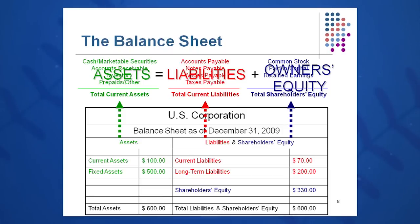On the right side, current liabilities are things you owe within one year, including accounts payable, notes payable, interest payable, taxes payable, and wages payable. What's left over after subtracting current liabilities from current assets is net working capital. When you subtract total liabilities from total assets, you get stockholders' equity — stockholders are the residual owners of the corporation.